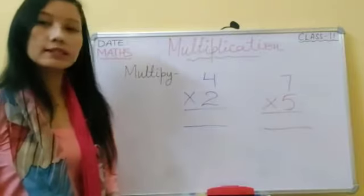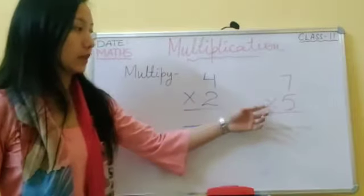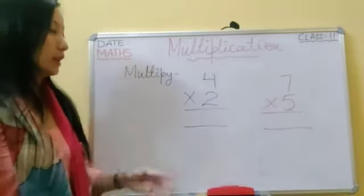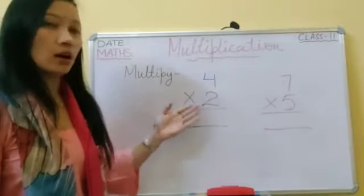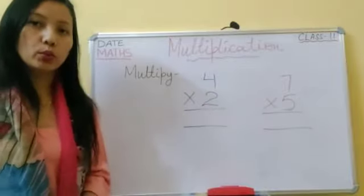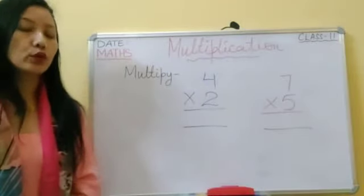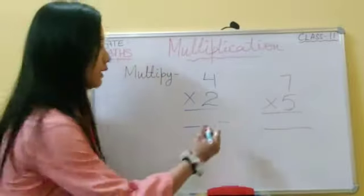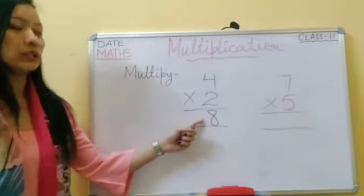Now let's do some examples. You have to multiply four by two and seven by five. For the first one, we recite the table of two: two ones are two, two twos are four, two threes are six, two fours are eight. So four multiply by two is equal to eight.